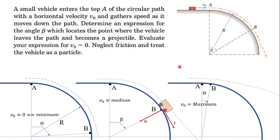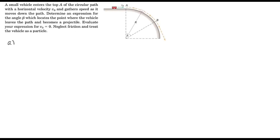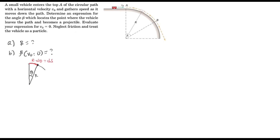The solution has two parts: first, evaluate beta in the general case; second, evaluate beta when V-naught equals zero. We begin by drawing the free body diagram. In the general case, when the particle reaches angular position theta, the radius is r, and the distance covered from initial point A to that angular position is ds, which equals r·dθ.